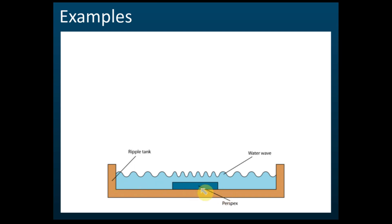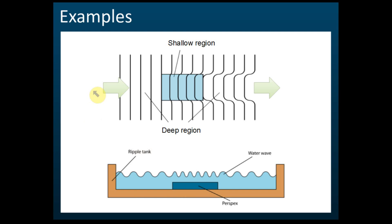For an example, consider a ripple tank where we place a piece of perspex. We use perspex because it is transparent, allowing light to pass through it and through the bottom of the ripple tank, forming bright and dark bands below the water. At the place where we have the perspex, the depth of the water is reduced, so that region is shallower. When the wave moves from left to right and passes through the perspex, which is the shallow region, the wavelength decreases and the speed decreases.